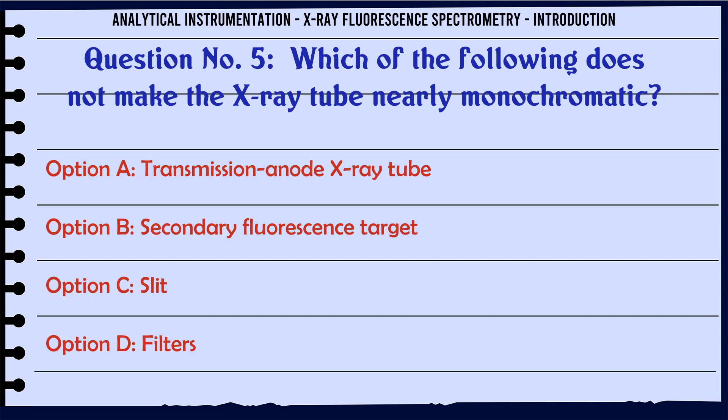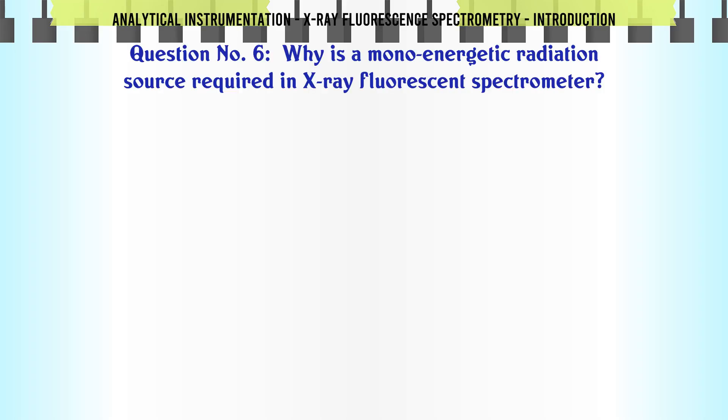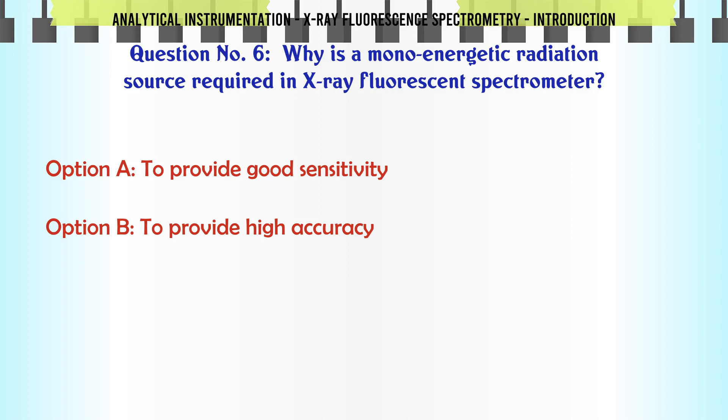Which of the following does not make the X-ray tube nearly monochromatic? Options: a. Transmission anode X-ray tube, b. Secondary fluorescence target, c. Slit, d. Filters. The correct answer is: Slit.